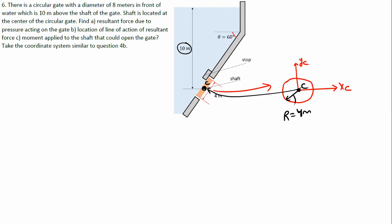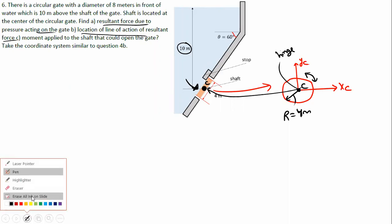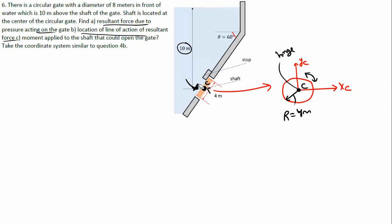There is a shaft here - the shaft means the gate can rotate. Water applies pressure on it, and it can rotate in one direction or another. We need to find: (1) the resultant force due to pressure acting on the gate, (2) the location of the line of action of the resultant force, and (3) the moment applied to the shaft by the water.